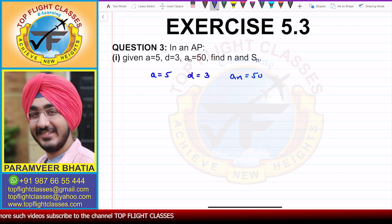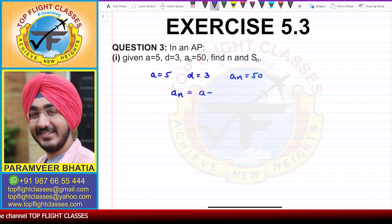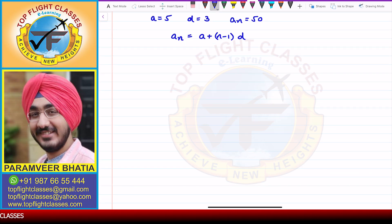So if we write the nth term formula, that is An is equal to A plus N minus 1 times D. Now here, we have A given and D given, so we can get N.